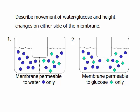Group question: describe the movement of water and glucose and the height changes on either side of the membrane. The first scenario has water and glucose with a membrane permeable to water only; the second has a membrane permeable to glucose only. Think about which way they will move and what will happen to the heights of the solution on either side. The first answer: water will move to the right.